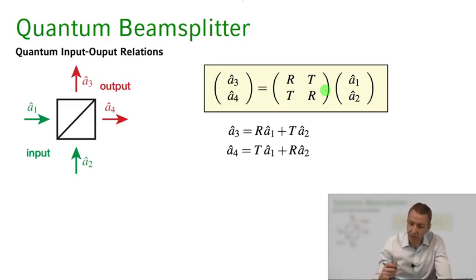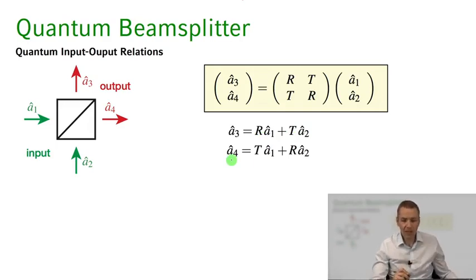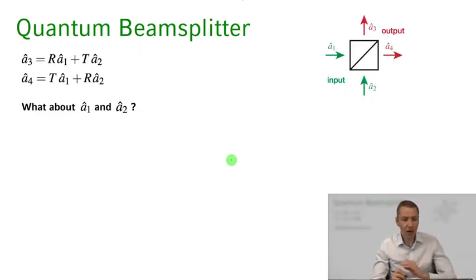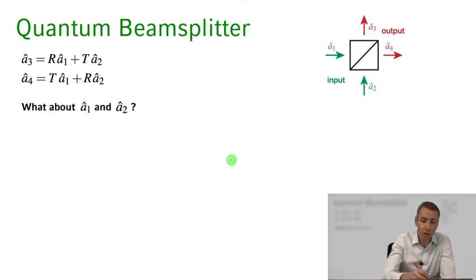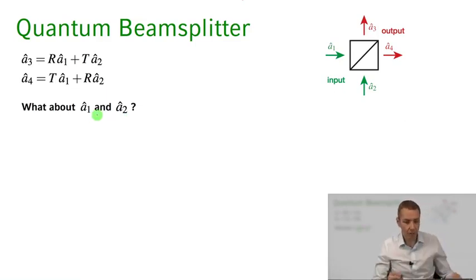We have, for example, the destruction operator for destroying a photon in mode 3, related to the destruction operators for modes 1 and 2 through these complex coefficients, and likewise for mode 4. Now we know a3 and a4, but what about a1 and a2? How are a1 and a2 related to a3 and a4? Let's calculate that quickly.